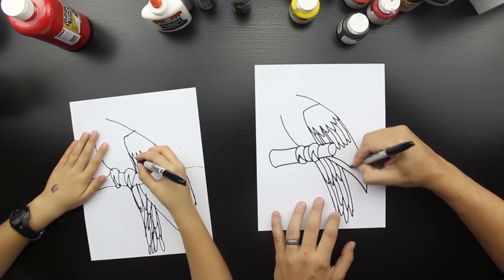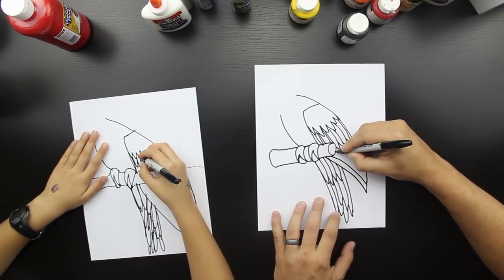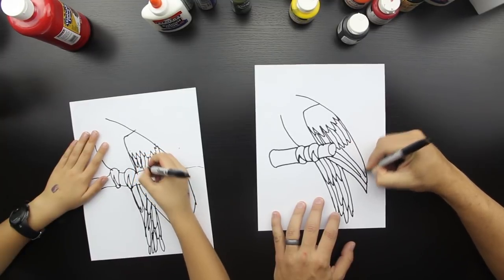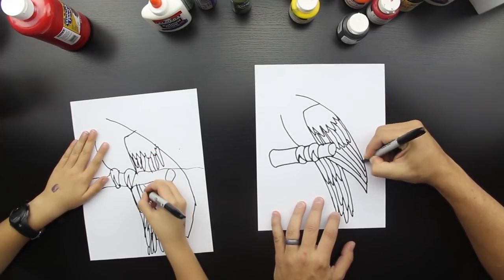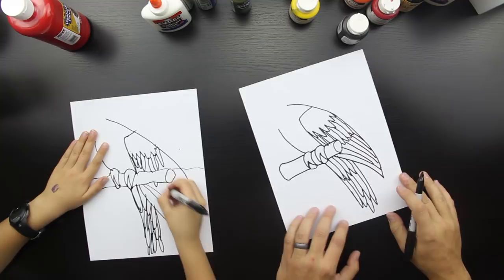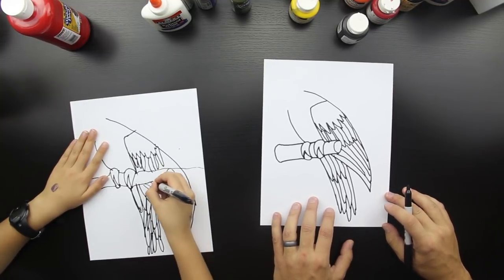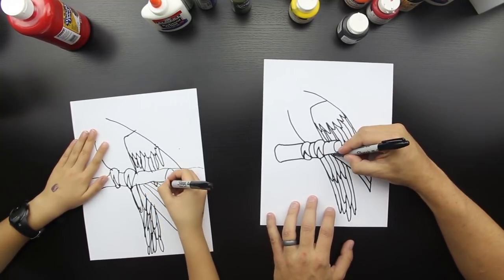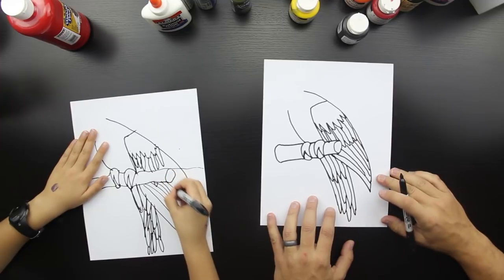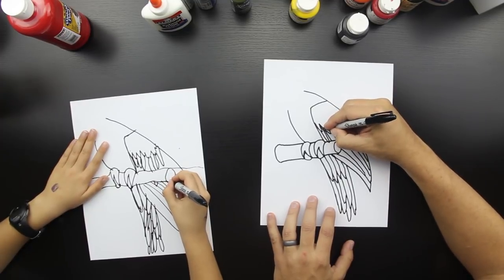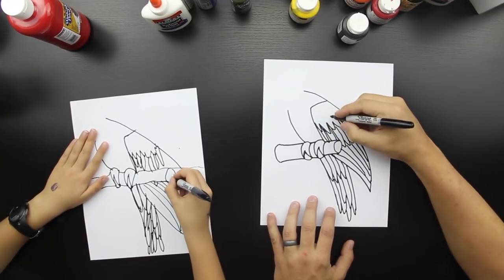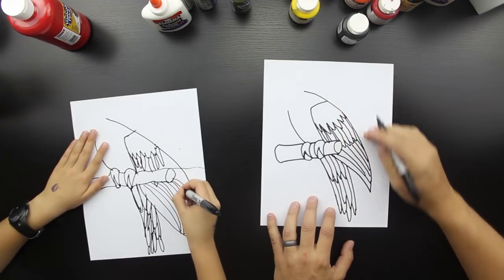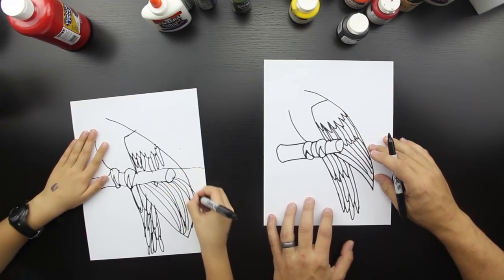Now we're going to make the long ones. And the long ones are just going to be lines that come from those feathers all the way to the end. Good. Good job, checkers. Keep going. Almost there.